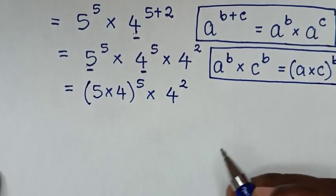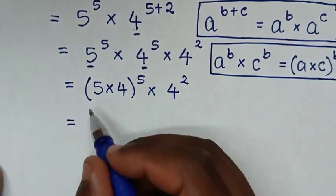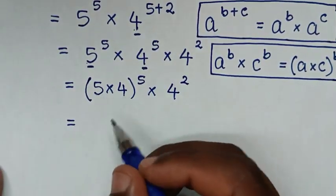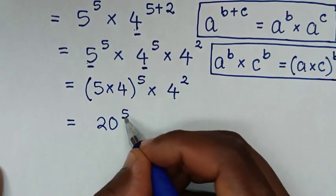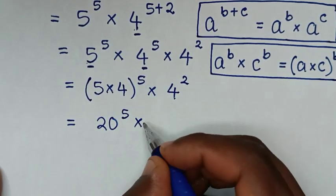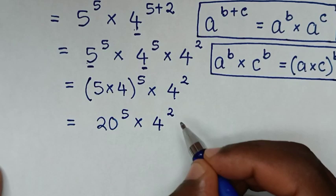The next step: it will be equal to 5 times 4, which is 20, giving us 20 power 5, then times 4 power 2.